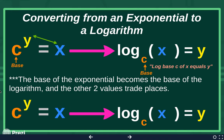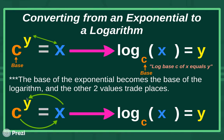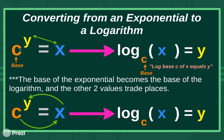Another way is a roundabout method. You start with the base of the exponential: log base c of x equals y. You can visualize it as a roundabout — log base c, cross the equal sign, of x, cross the equal sign, equals y. Either x and y trade places, or you do this roundabout thing around the equal sign. Whichever way makes sense to you, remember it — it's very important to convert from an exponential to a log.